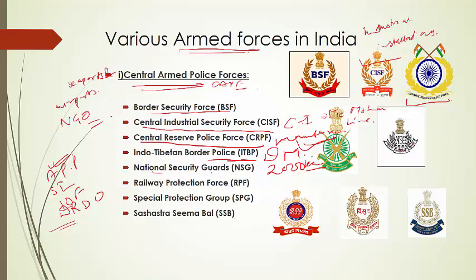The next force is the National Security Guards — NSG — a commando unit originally created for counter-terrorism and hostage rescue missions. It is popularly known as the Black Cats and is an elite commando wing. NSG has been increasingly tasked with protection of VIPs, a role that has expanded as several politicians have come to view security protection as a status symbol — which should not be the case.